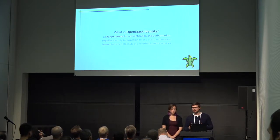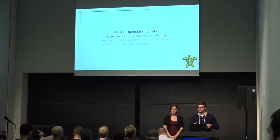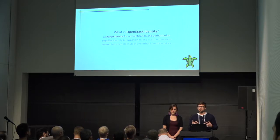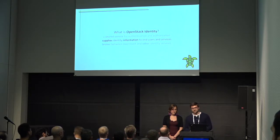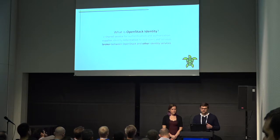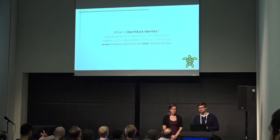OpenStack identity is an API reference and Keystone is an implementation of that API reference. It essentially came out of the need to reduce duplicate code across OpenStack services back in 2012. It fills a pretty important role in OpenStack — it's meant to supply end users and services with information about identities and the authorization those identities have. Keystone can also sit in between OpenStack and other places that your users might come from, like LDAP or external identity providers.